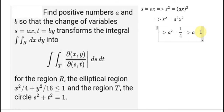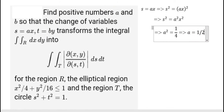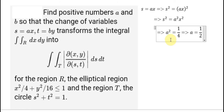Now we can find a. Since the question asks for positive numbers, a should be the positive square root of 1 over 4, giving us a equal to 1 over 2.